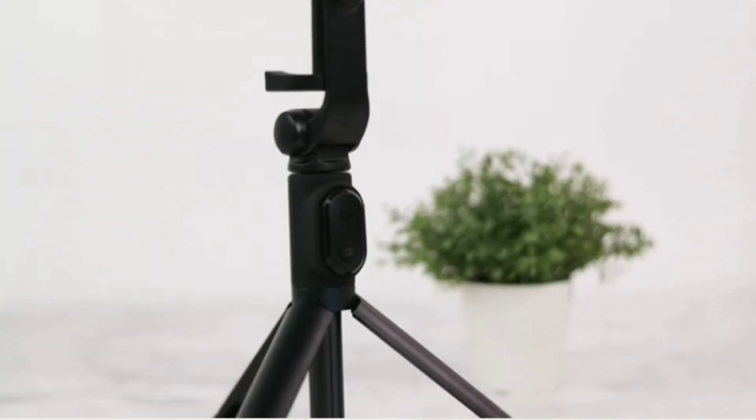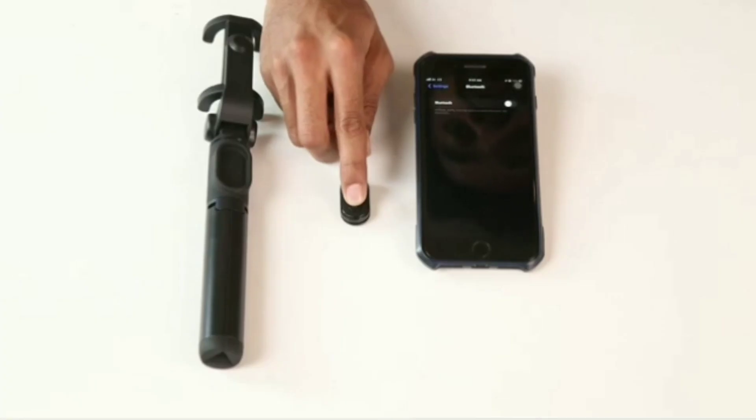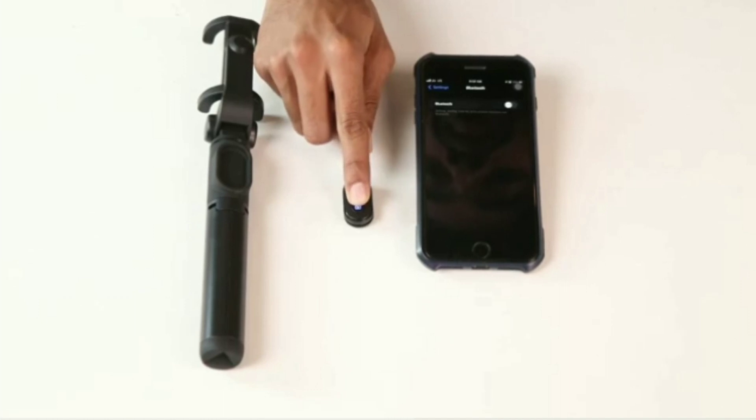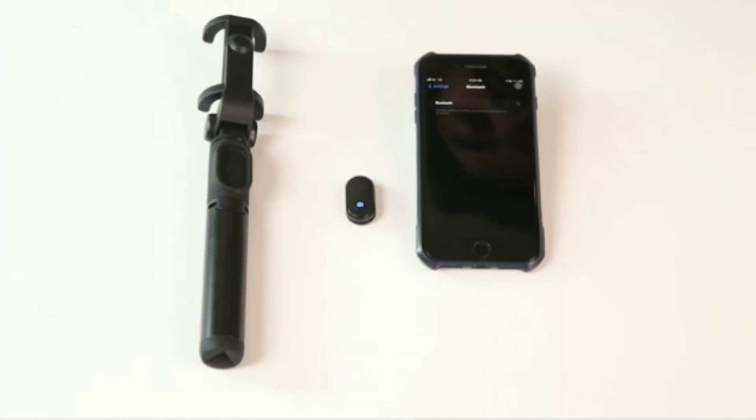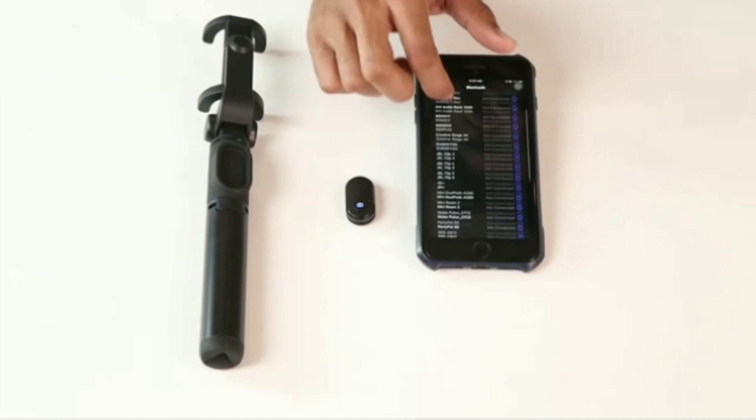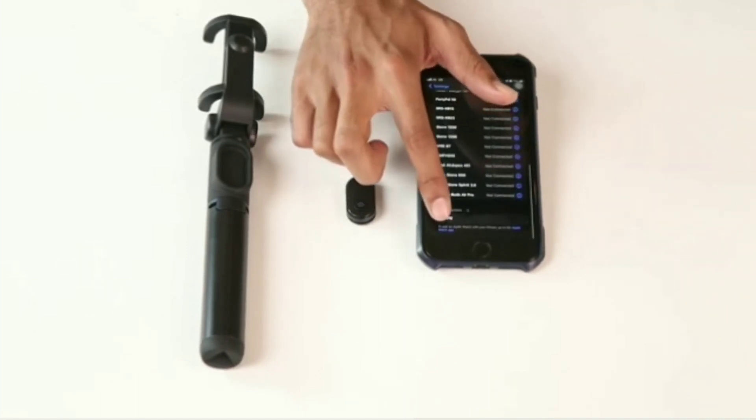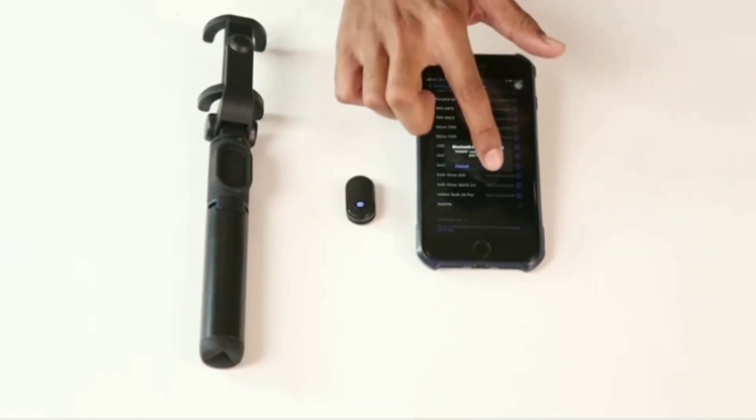And now, let me show you how to pair it with your smartphone. All you have to do is long press the camera symbol on the remote until it switches on. Turn on the Bluetooth on the phone, search for XMZPG with the keyboard symbol under available devices and click it on to pair the devices.